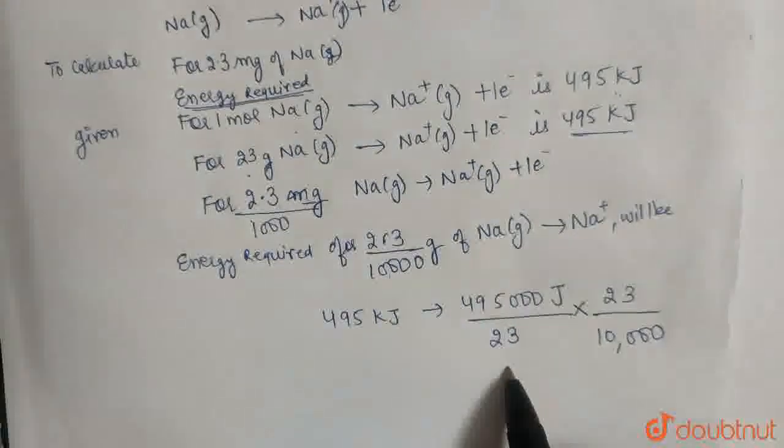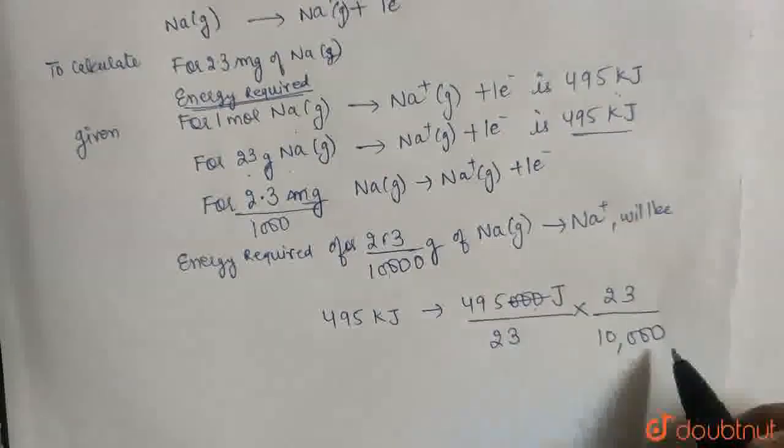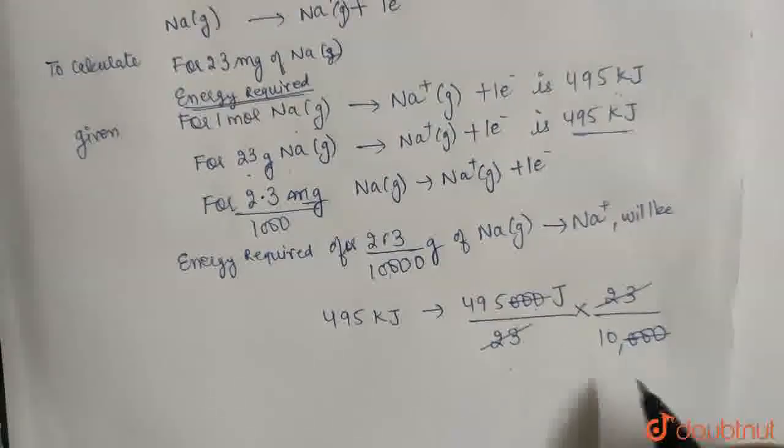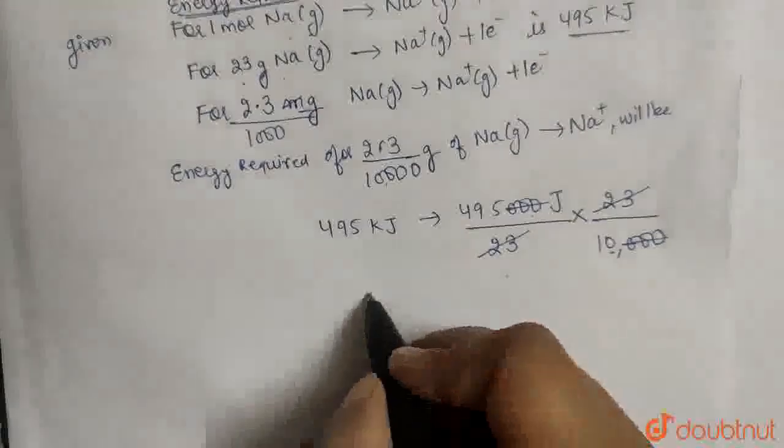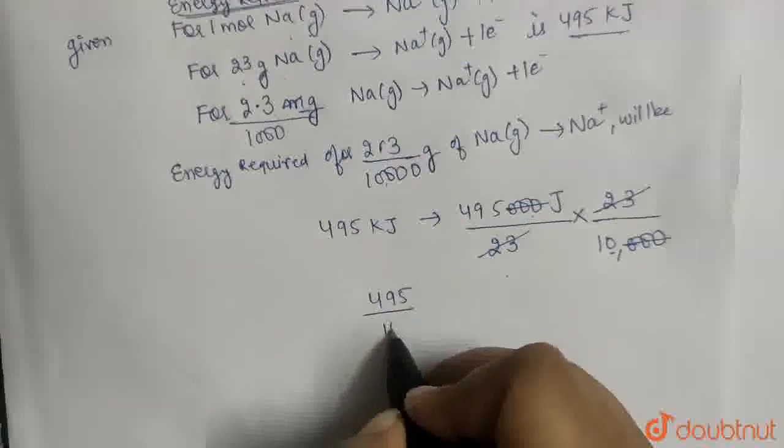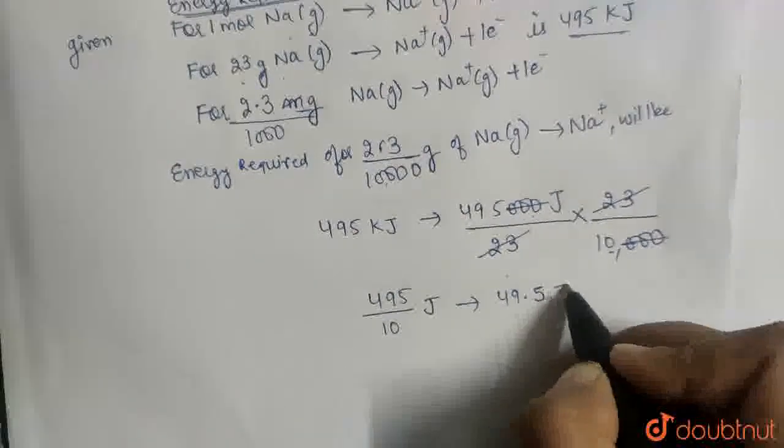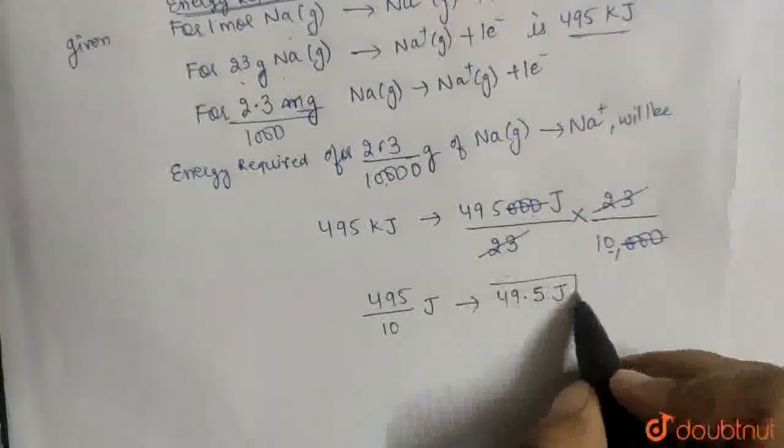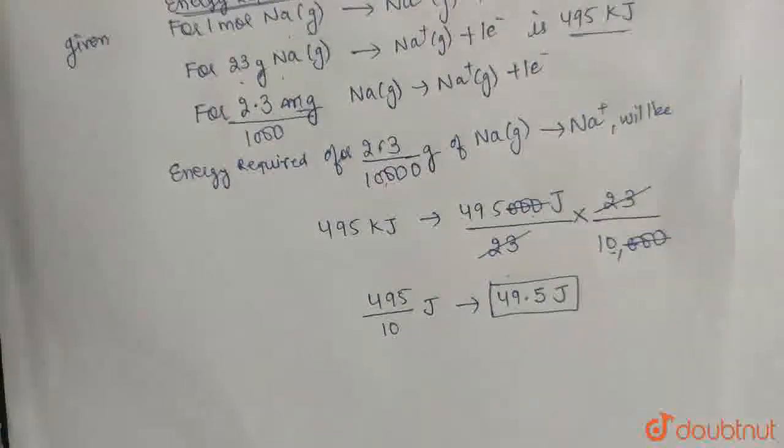For 1 gram it becomes divided by 23. And to find for 23 by 10,000 g, we need to multiply. Look here, 3 zeros with 3 zeros cancel. 23 with 23 cancel out. And this 10 that remains, that means it becomes 495 by 10 joules. Okay, I hope this answer is clear to you all, thanks a lot.